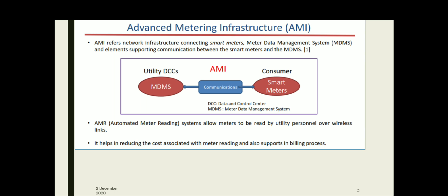Hello everyone, welcome back to Distributed Regeneration and Smart Grid Lecture Series. In this video, we are going to discuss Advanced Metering Infrastructure. The main objective of Advanced Metering Infrastructure or AMI is to enable two-way communication between a smart energy meter and its main system, known as the Head-End System, to enable remote reading, monitoring and control of electrical energy meters.